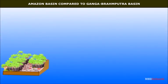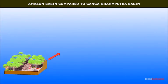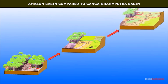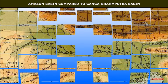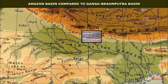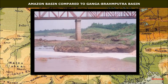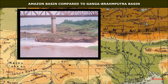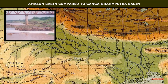Settlement of people in the Amazon in recent times is posing a threat to the natural environment. The Ganga-Brahmaputra plain already has a heavy density of population. Development activities are causing similar damages to the ecology of rivers like the Ganga and Yamuna in the Ganga-Brahmaputra plain.